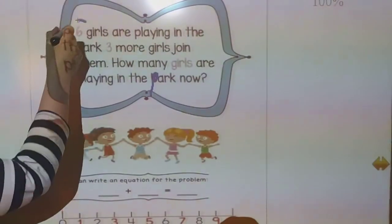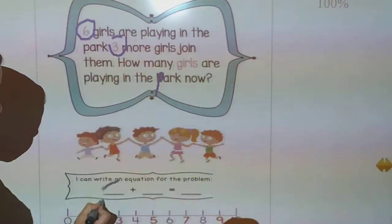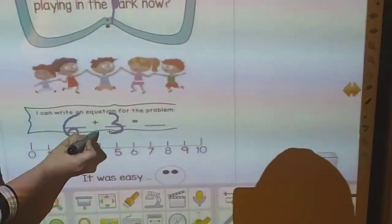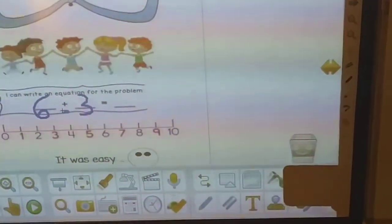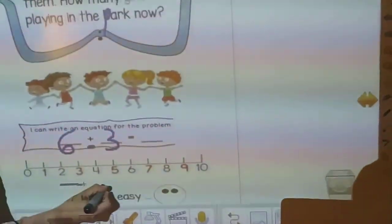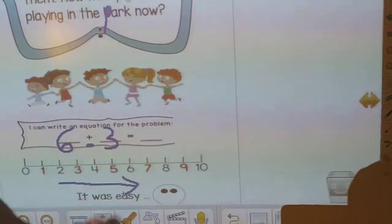I have to circle the two numbers. Then I will write the two numbers. Then I will see is it plus or minus? Six plus three. And plus means going forward. I will jump this way.